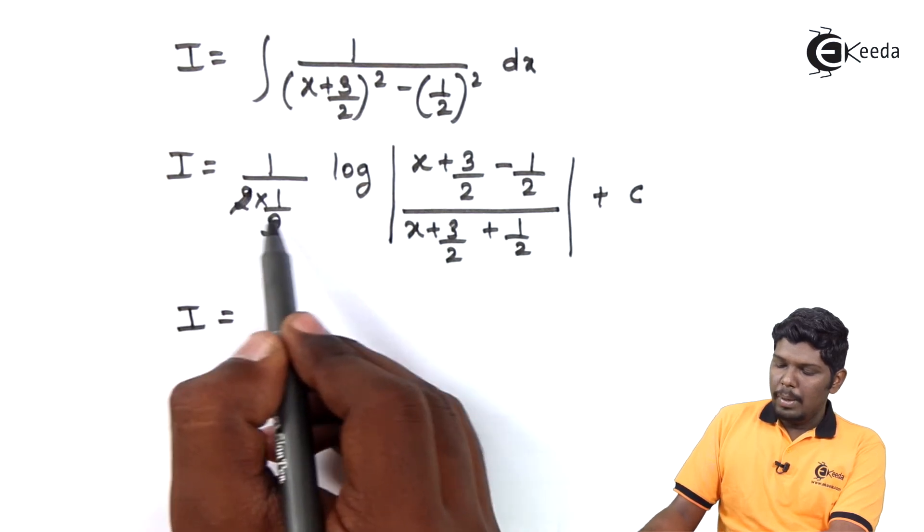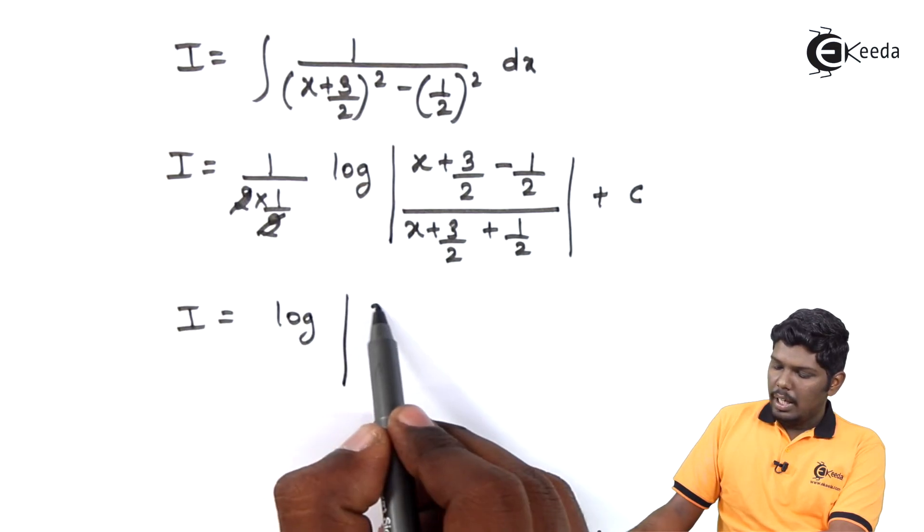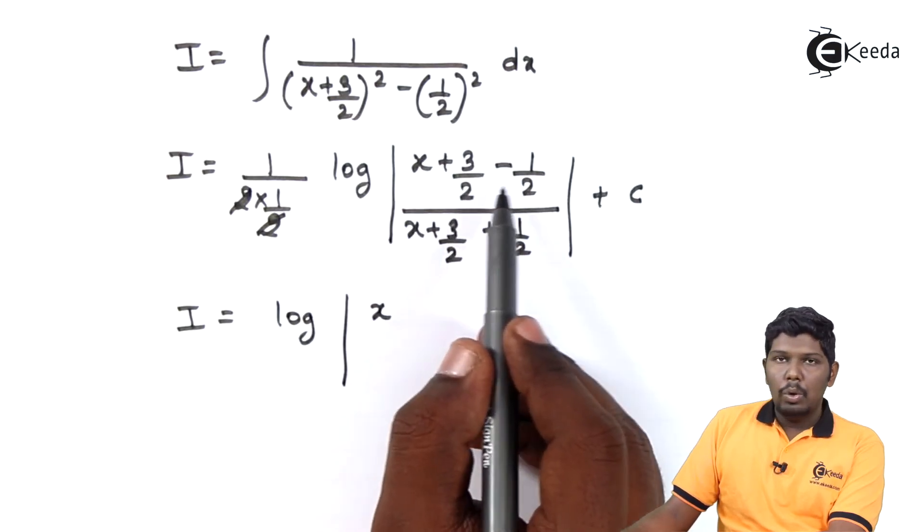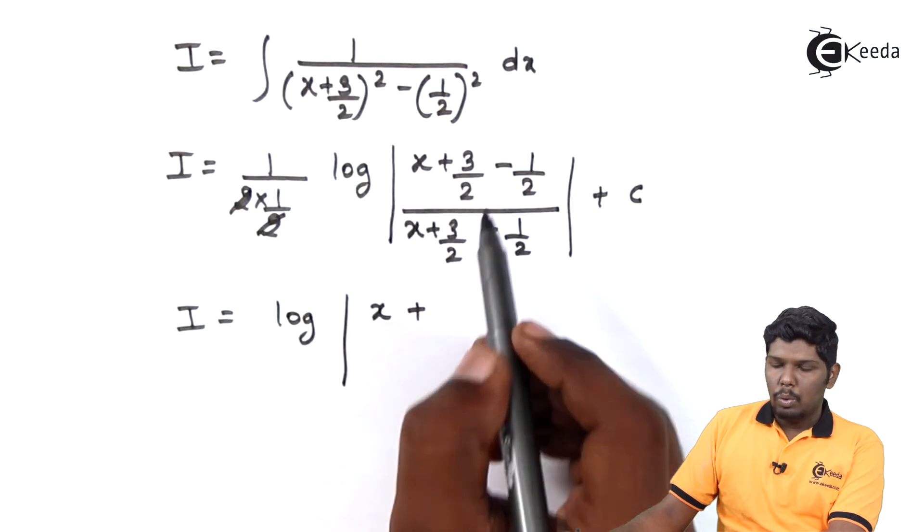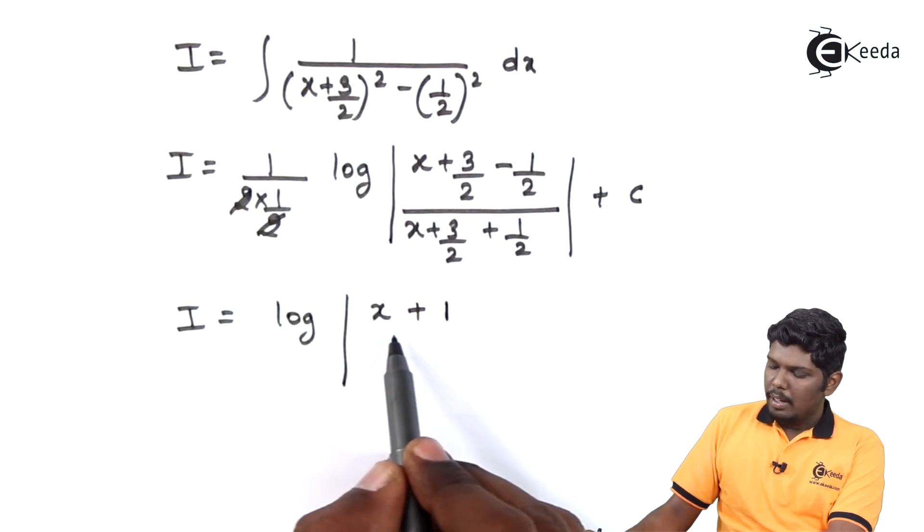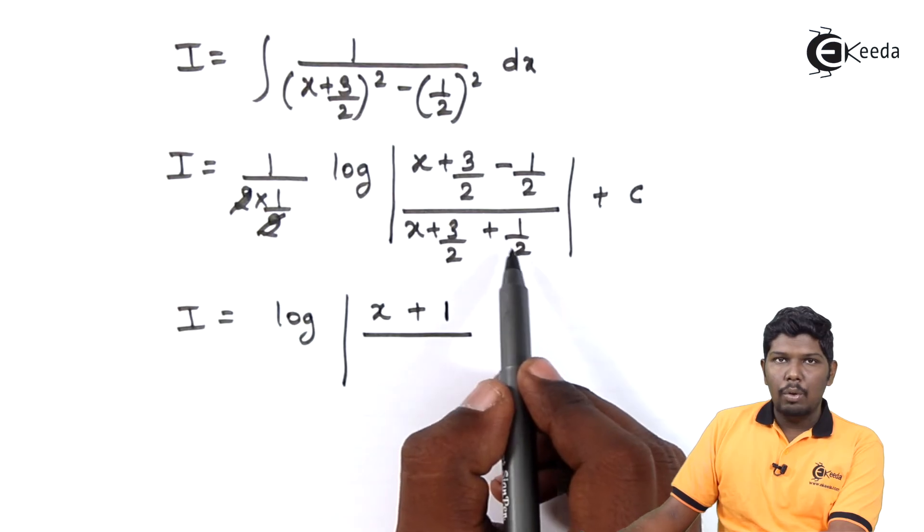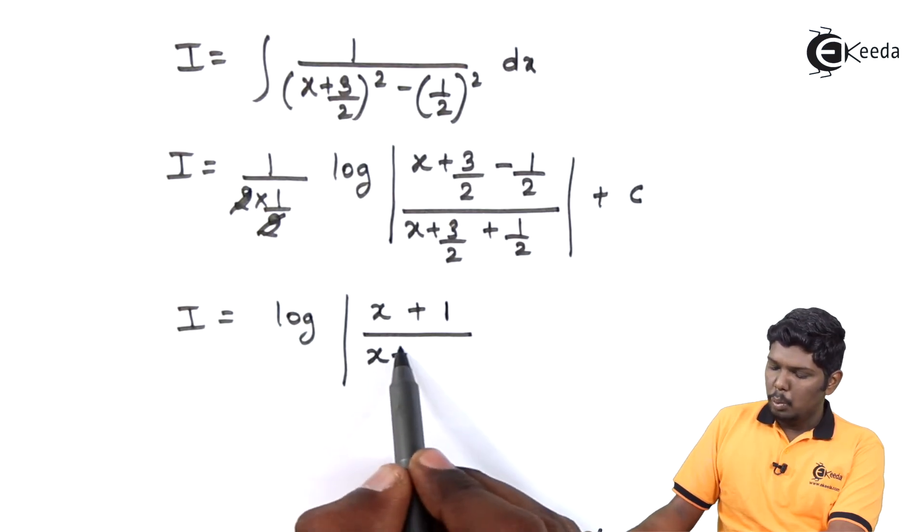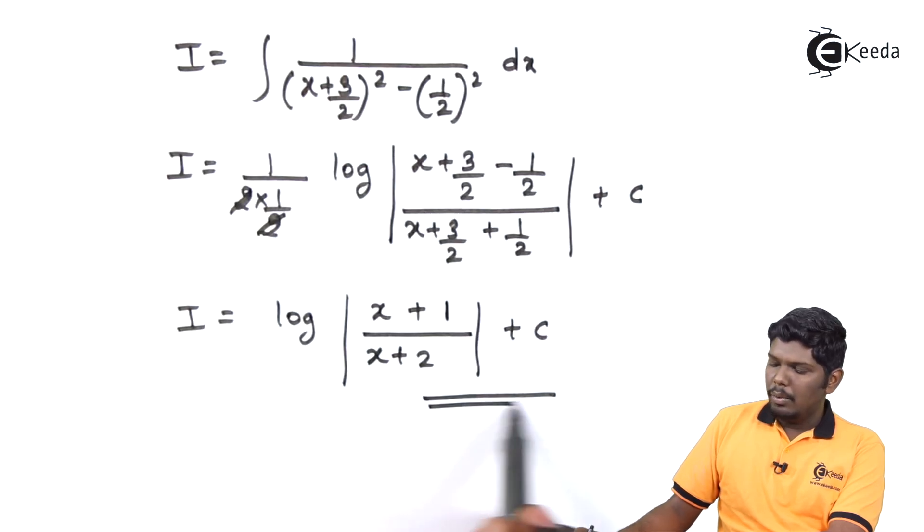Further here 2 will be cancelled. We have log x plus 3 by 2 minus 1 by 2 will give you 2 by 2, that is 1, upon 3 by 2 plus 1 by 2 will give you 4 by 2, that is 2, plus c. This is our final answer.